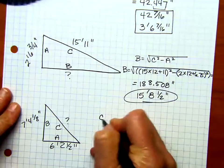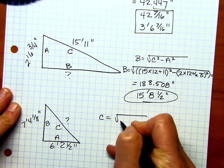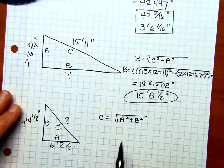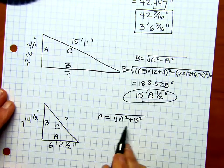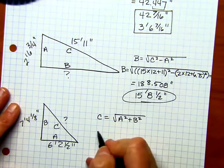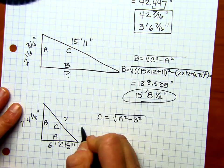So, again, C equals square root of A squared plus B squared. Remember, to find C, that's the only one that has the plus. The other two have a minus. Now, we're going to plug in, and we're going to make it really big.